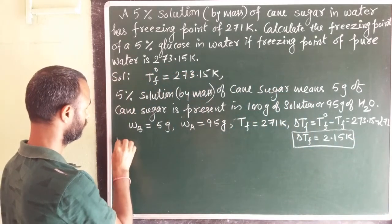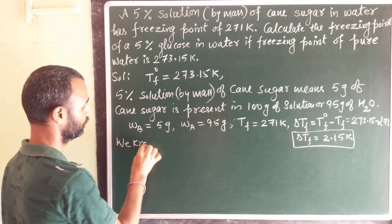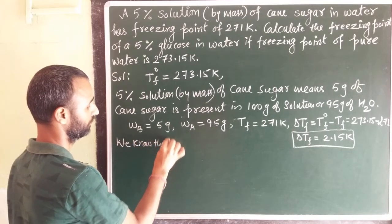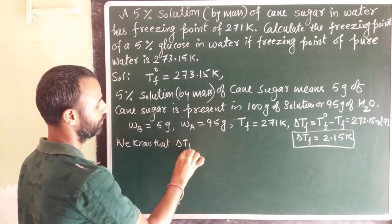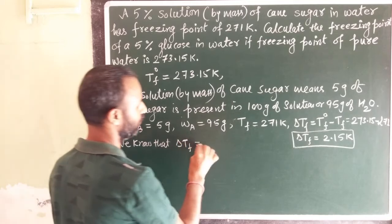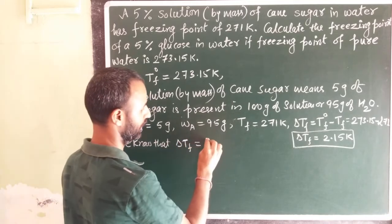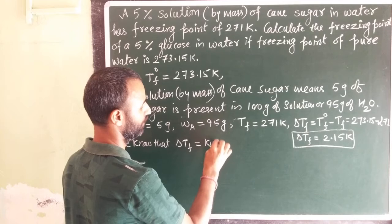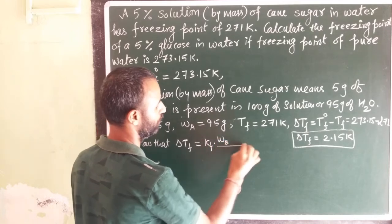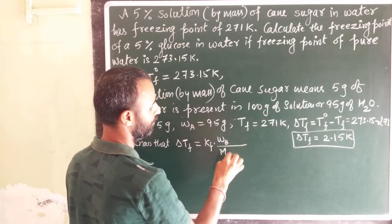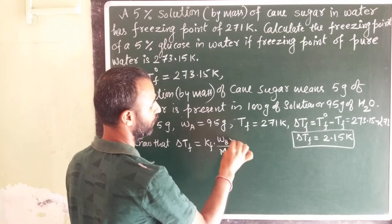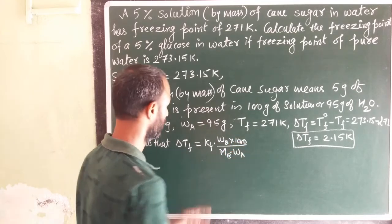Now we know that delta Tf is equal to Kf into WB by MB into WA into 1000, because delta Tf is Kf times M and M is WB into 1000 over MB into WA.